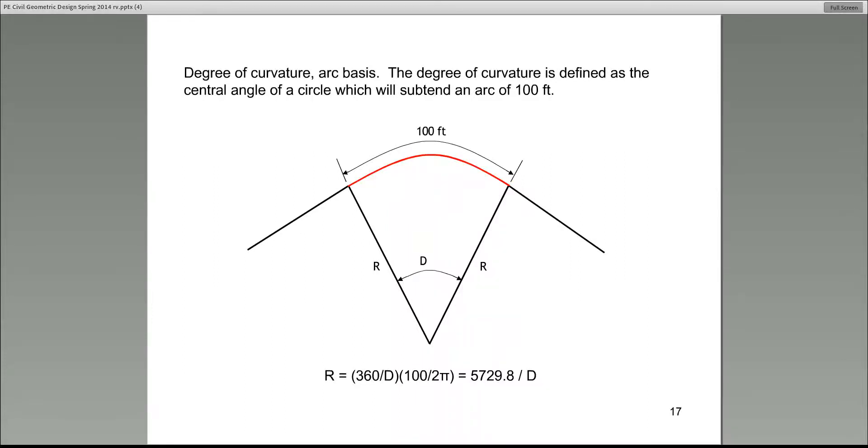This gives us the definition for the degree of curvature on the arc basis. The degree of curvature on the arc basis is the central angle subtended by an arc of 100 feet. So the central angle D for a given curve that subtends an arc - now this is no longer a chord, it's an actual arc part of the circle - which is 100 feet. The angle that subtends an arc of 100 feet is defined as the degree of curvature for the curve.